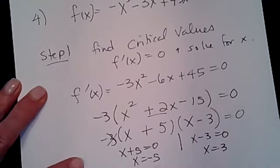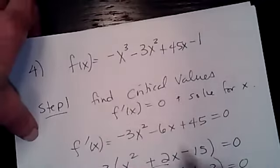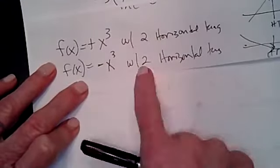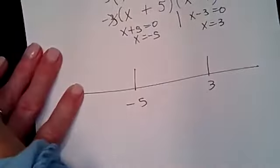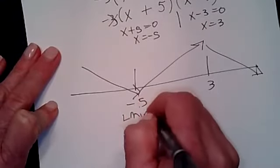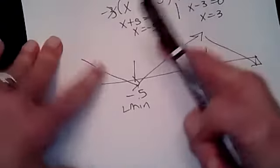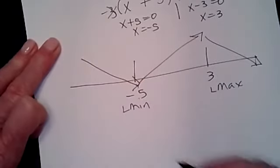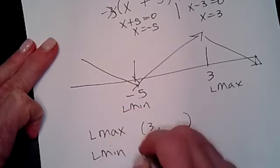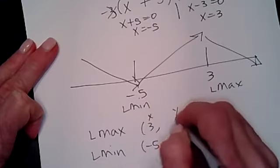This is a negative x³ function. With two critical values, it always goes down, up, down — so I don't need to test into my derivative. I can just say down, up, down. That means a local min where it meets at the bottom and a local max where it meets at the top. Local max at x = 3 and local min at x = -5.